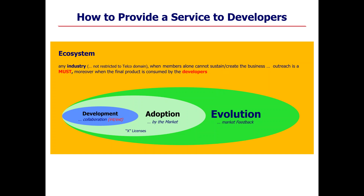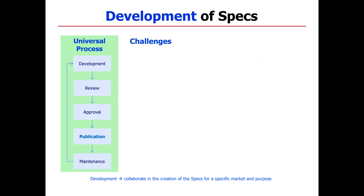The last step is evolution. You want the market not just to consume version one, but version two and version three of your specifications. In order to do that, you need feedback from the market — because the market may take you to a path that at the beginning you were not thinking to go. So bringing all these things together is something we are working on in our organization.